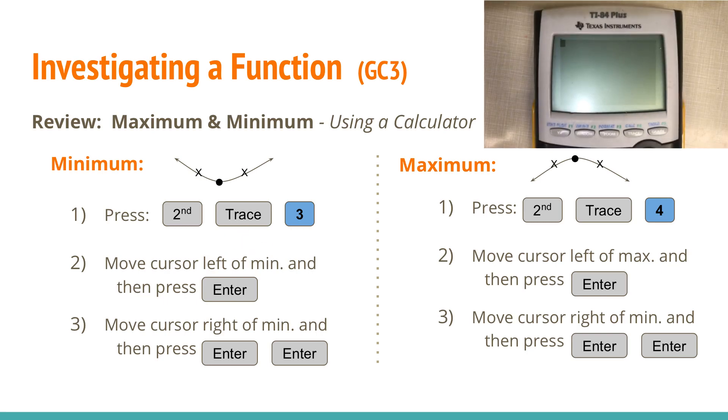In this example that I have here on the calculator, when I hit for this equation right here and I hit graph, I see that I have a minimum here, so I would want to try to do second trace 3. When I press second trace 3, the cursor has to be to the left of the lowest point, because it says left bound. Move the cursor to the left of the minimum value, and then press enter.